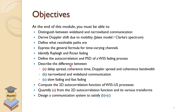After these new terminologies, I'd like you to be able to compute the 2D autocorrelation function for a wide-sense stationary process with uncorrelated scattering. We'll look at how we quantify from the 2D autocorrelation function and its various transforms, and design a communication system that satisfies given conditions — quantifying the delay spread and other parameters from the 2D correlation function.